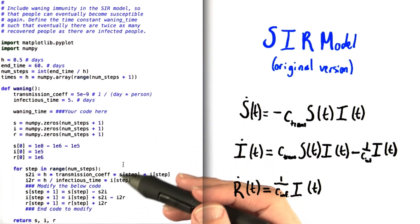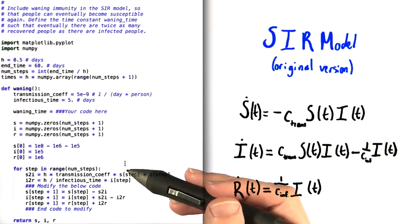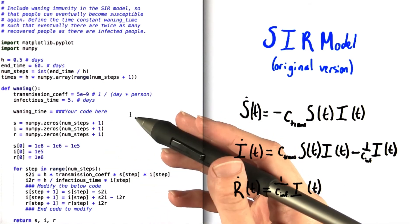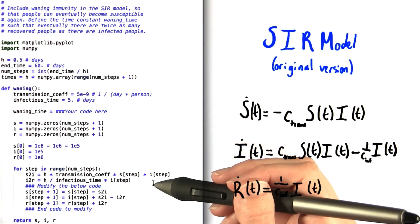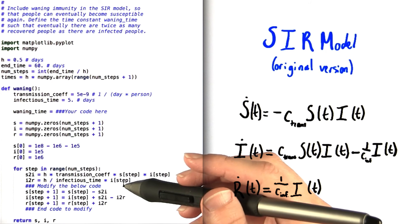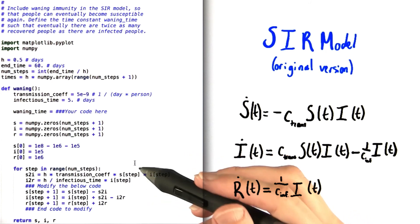What you need to do is to define R2S, the number of people who, in one time step, become susceptible again after they've recovered. Just to be clear, all three of these are measured in number of people, not in number of people per time. So make sure that you check that your units are correct.